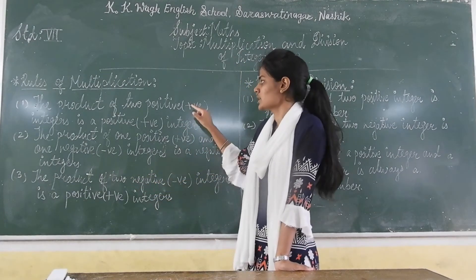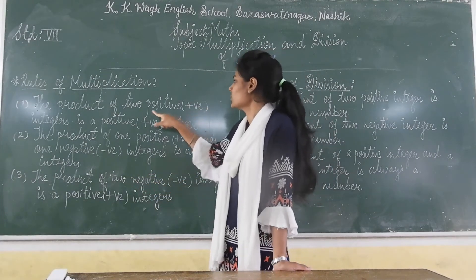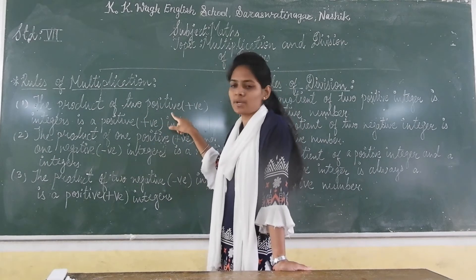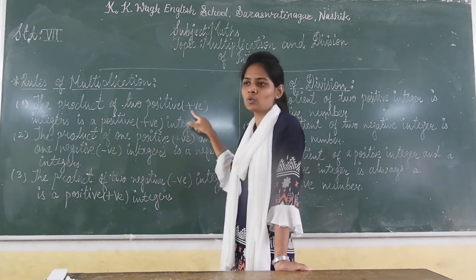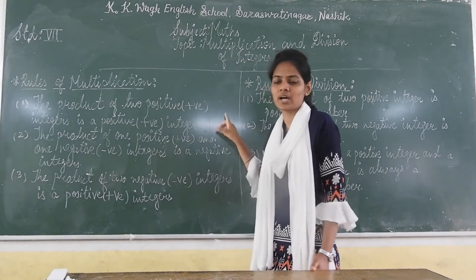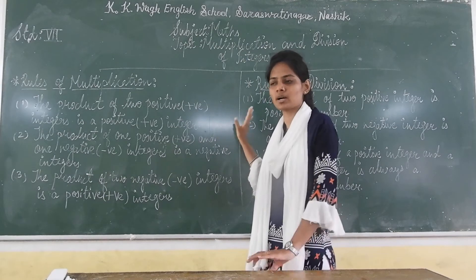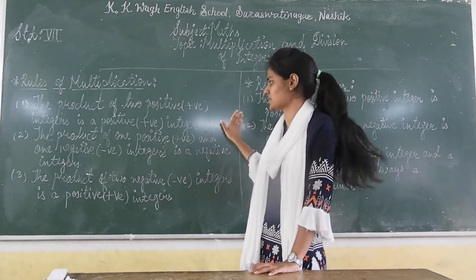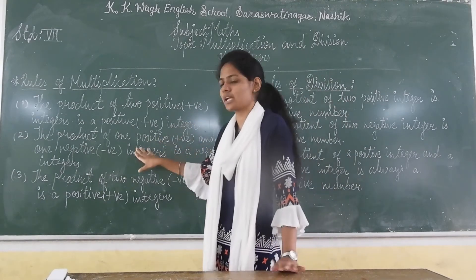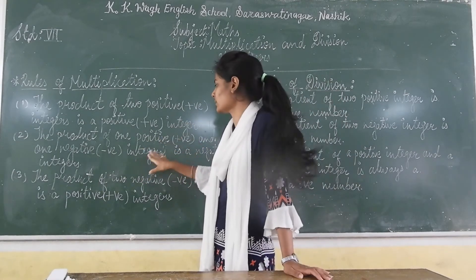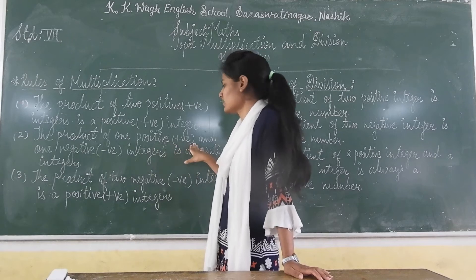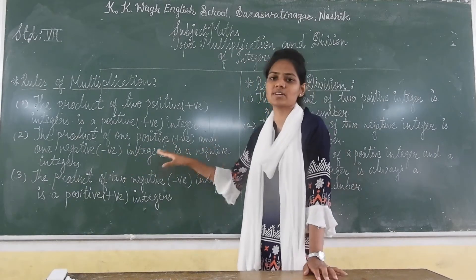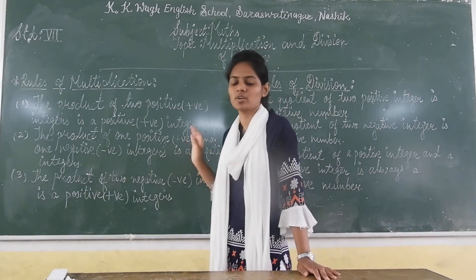Suppose if we have two positive integers, for example plus 4 into plus 2, the answer will be coming in positive. Second rule is that the product of one positive and one negative integer is always negative.